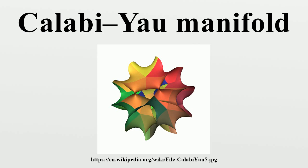They were named Calabi-Yau spaces by Candelas et al., after E. Calabi who first conjectured that such surfaces might exist, and S. T. Yau who proved the Calabi conjecture. The motivational definition given by Yau is of a compact Calabi manifold with a vanishing first Chern class that is also Ricci flat. Calabi conjectured their existence and Yau proved the conjecture.